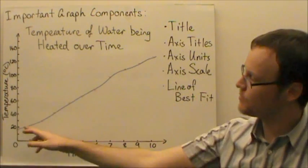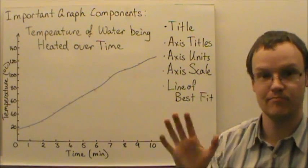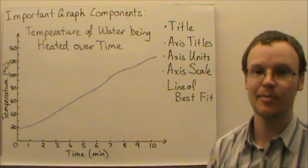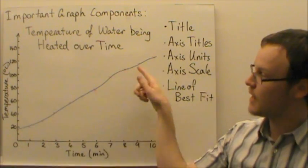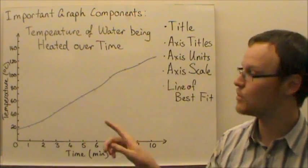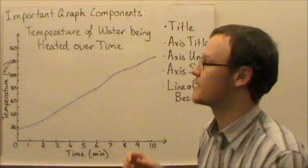And also a line of best fit that shows how the points trend. This particular type of graph is a scatter graph that has a line of best fit placed through all of the different scatter points of the data that's been taken.